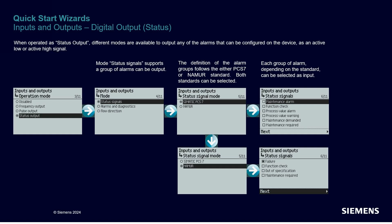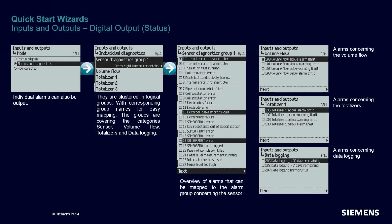When the digital output is configured to relay the status of the system, the wizard will guide you through a few steps, starting with defining the mode of the status signals. You can choose between NAMUR mode or PCS7 mode. Then you can define the alarms and diagnostics, organized in logical clusters covering parts of the product: the sensor, the volume flow, the totalizers, and the data logging. The FMT-020 offers a very complete list of possible alarms.